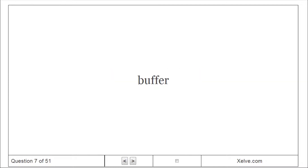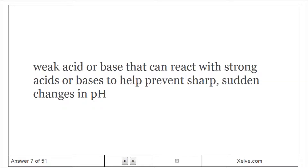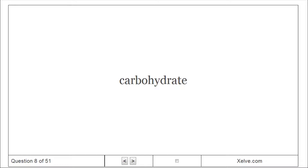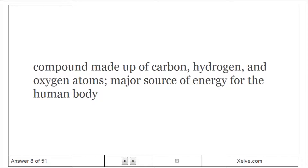Buffer: Weak acid or base that can react with strong acids or bases to help prevent sharp, sudden changes in pH. Carbohydrate: Compound made up of carbon, hydrogen, and oxygen atoms; major source of energy for the human body.